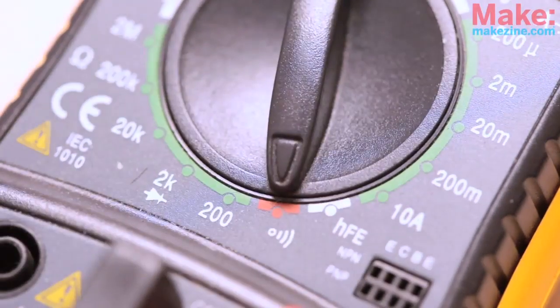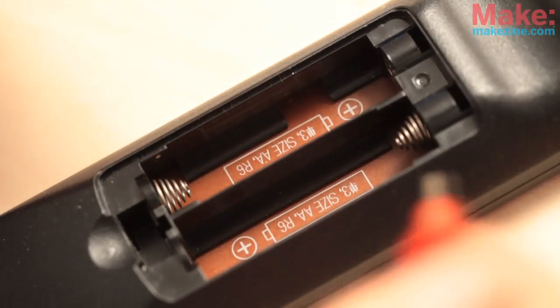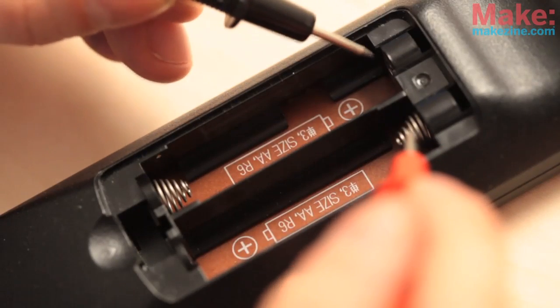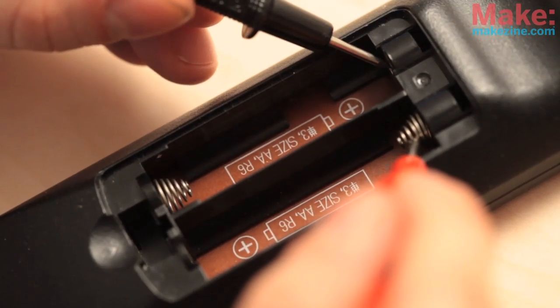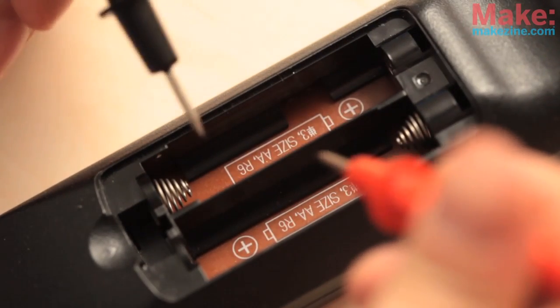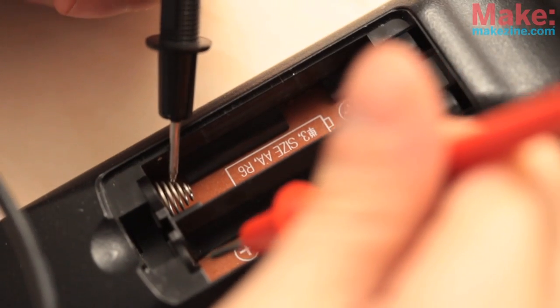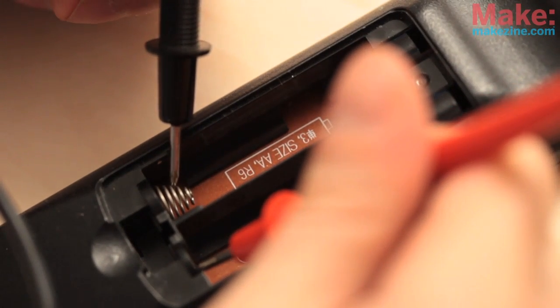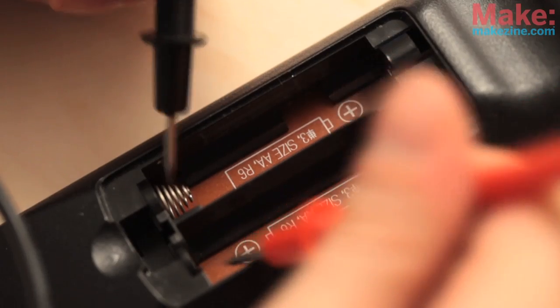Switch it to continuity mode and put one probe on the positive terminal of one battery compartment and the other probe on the negative terminal of the other battery compartment. If your multimeter beeps, that's where the batteries are connected to each other. As you see when I check the other pair, there is no continuity. These are the terminals we're going to wire our solar cell to.